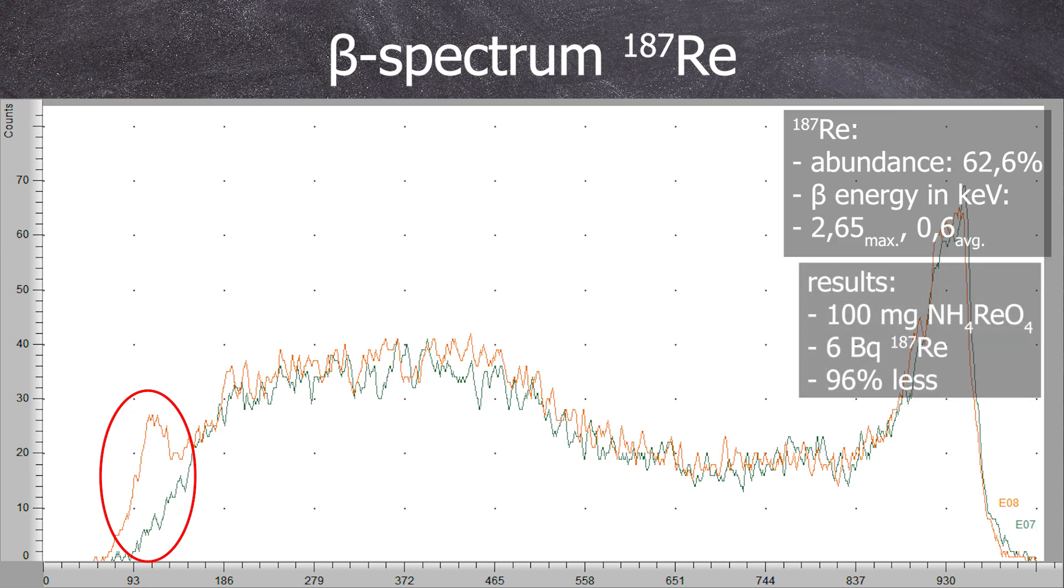We used 100 mg of ammonium perrhenate and measured a rhenium-187 activity of 6 becquerel, which is 96% below the calculated value.